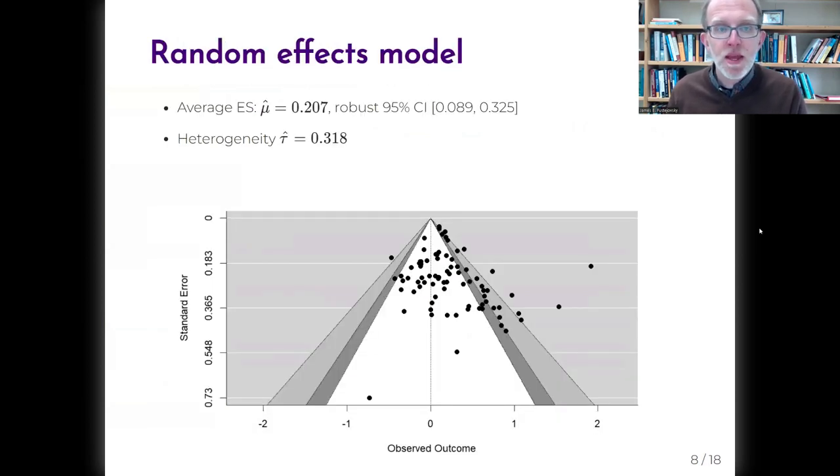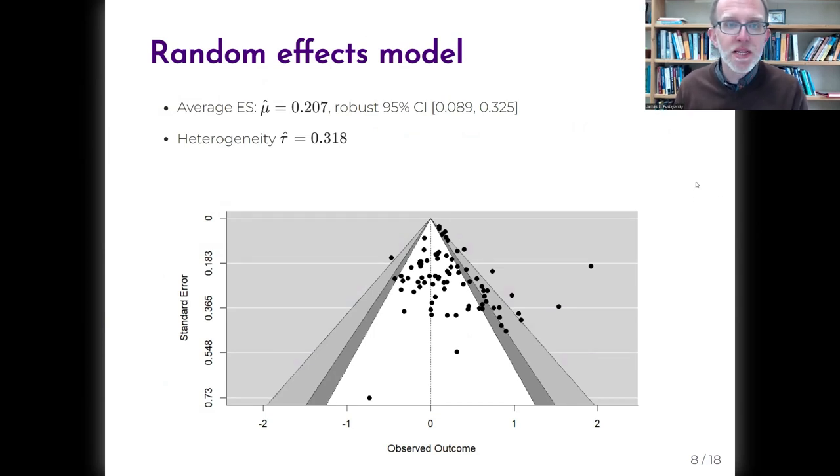Here's a funnel plot of the data. A basic random effects meta-analysis indicates an average effect of about 0.2 standard deviations and substantial heterogeneity of about 0.32. The funnel plot definitely has some asymmetry to it, so you might well be concerned about selective reporting bias with these data.